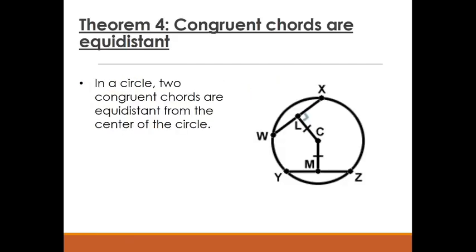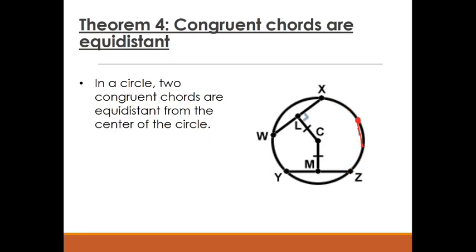Theorem 4: congruent chords are equidistant. In a circle, two congruent chords are equidistant from the center. If chord WX is congruent to chord YZ, then length CM must equal length CL. Think of it logically: a chord near the edge of a circle is short, but as chords get closer to the center they get longer. So it makes sense that two chords of the same length are the same distance from the center.